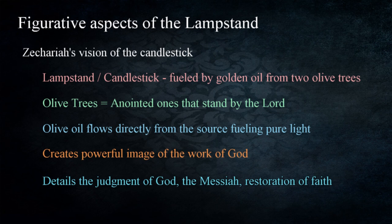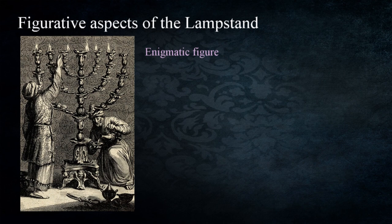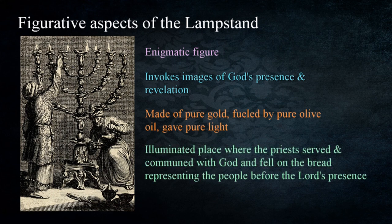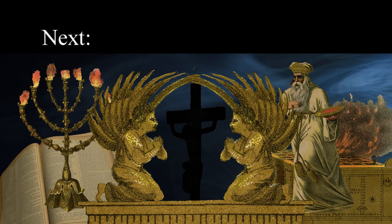The lampstand remains an enigmatic figure that silently invokes images of the presence and revelation of God. It was made of pure gold, fueled by pure olive oil, and gave light in a place where the priests served and communed with God. Its light fell on the unleavened bread representing the presence of the people before the Lord, and was to burn continually. In the next lesson we'll discuss the structure where the lampstand, ark of the covenant, and other objects were placed — some have an idea this was just a mobile tent carried through the desert, but what we find is something completely different.